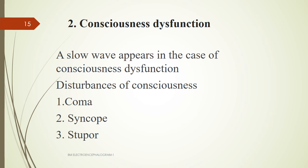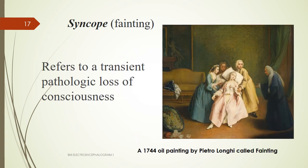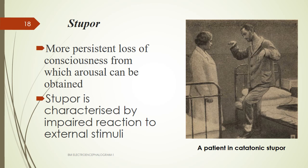The second major application is consciousness dysfunction, where slow waves appear. Disturbances of consciousness include coma, syncope, and stupor. Coma is a permanent state of sleep characterized by loss of consciousness from which arousal cannot be elicited, produced by lesions blocking the connection between the ascending reticular activating system and the thalamus. Syncope is fainting — a transient pathological loss of consciousness. Stupor is a more persistent loss of consciousness from which arousal can be obtained, characterized by impaired reaction to external stimuli.